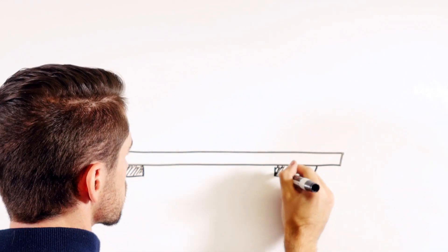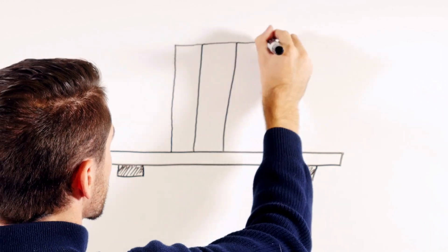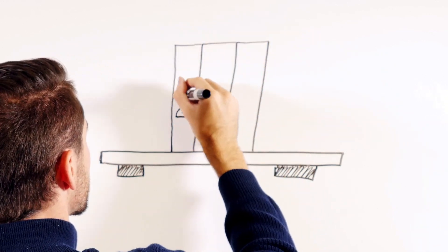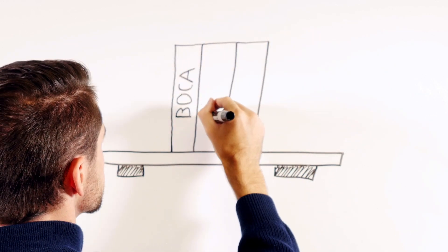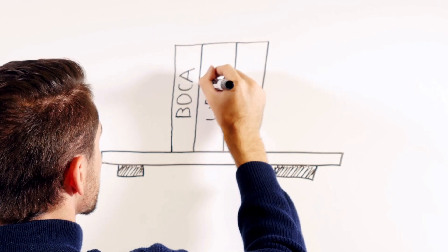Prior to 2000, there were three model building codes in the United States, now called the legacy codes: BOCA National Building Code, UBC Uniform Building Code, and SBCCI Standard Building Code.